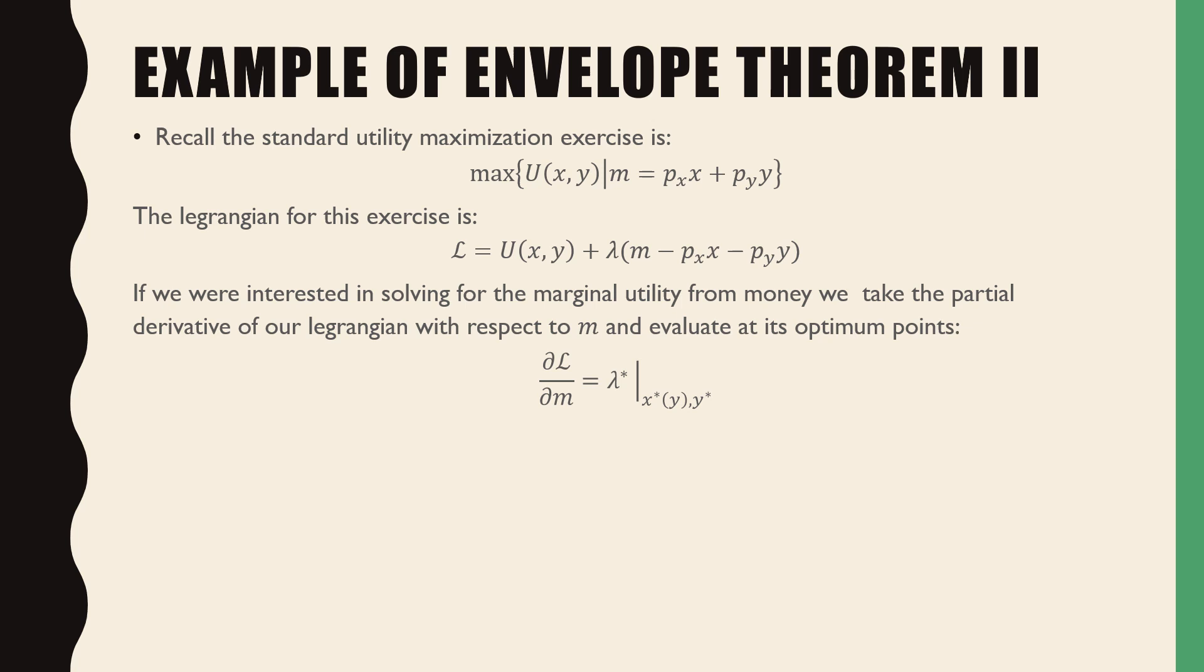If we are interested in solving for the marginal utility from money, we simply take the partial derivative of our Lagrangian with respect to m and evaluate it at its optimum points. This is an implicit value that is not completely obvious, but comes from the multiplier itself.